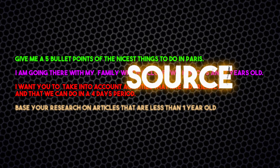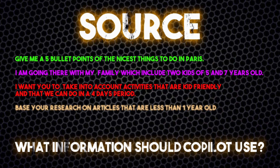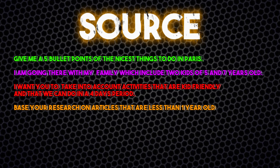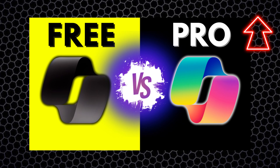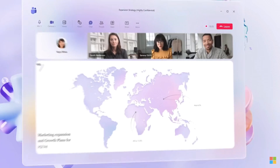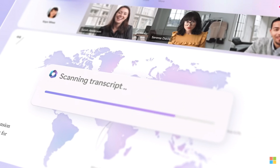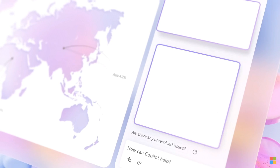The fourth and last ingredient of the secret prompt formula is the Source — in other words, what information or samples do you want Copilot to use? For example, 'Base your research on articles that are less than one year old.' This gives Copilot more information on what you are looking for. If you use Copilot in the Microsoft 365 apps, the source is especially useful in Outlook — for example, 'Summarize my 10 latest emails,' or 'Give me a summary of my five previous Teams conversations that I missed during my vacation.'